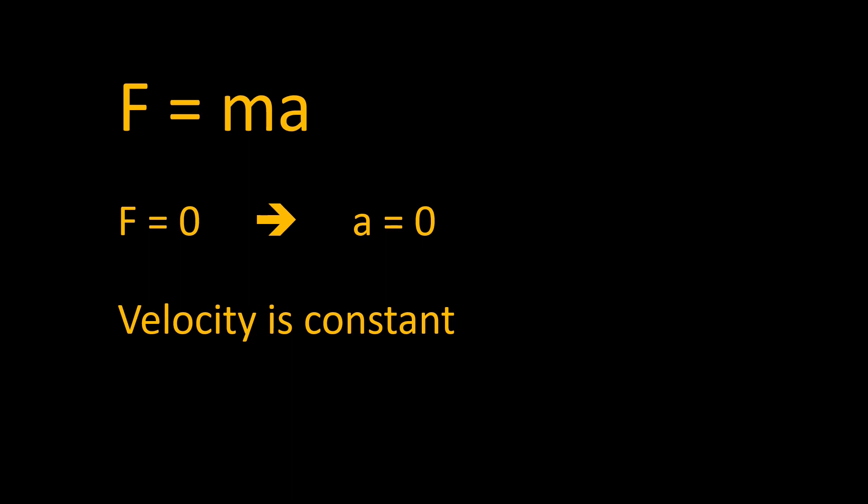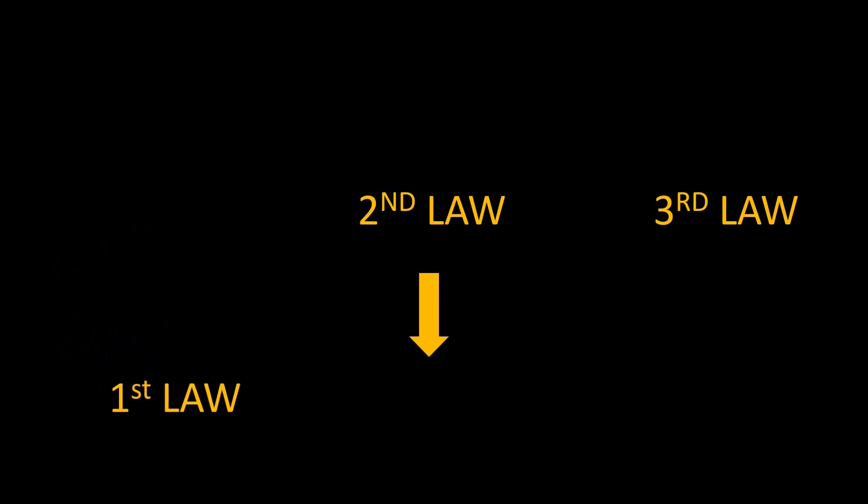As I was saying, if F equals zero, then a equals zero, which implies the body will continue with the same velocity or will remain at rest if it were at rest initially. So what's the problem? The problem is this is the first law of motion — so we deduce the first law of motion from the second law, which implies the first law of motion is not required and is thus useless.